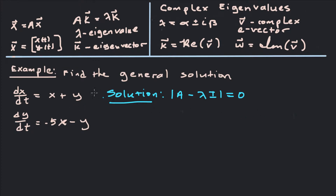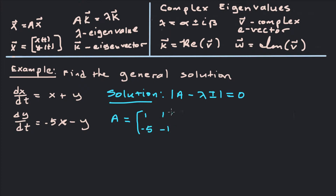The system of differential equations we have here is dx/dt = x + y, dy/dt = −5x − y. The general solution is found by starting with det(A − λI) = 0. So what is A? A is just the coefficient matrix: [1, 1; −5, −1].